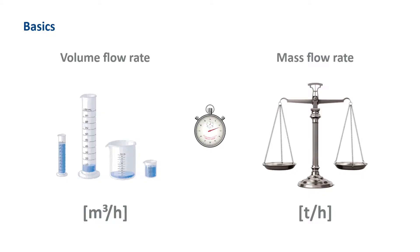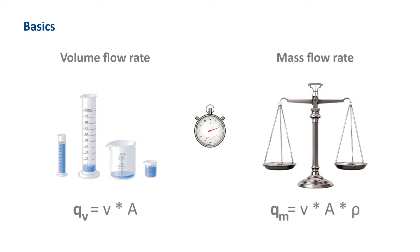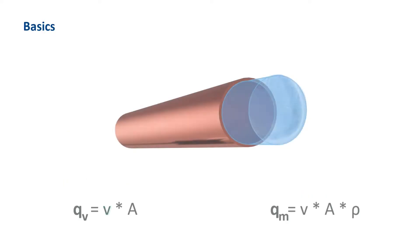All devices available from Jumo are indirect measuring methods. The indirect measuring methods can only record the flow velocity or a resulting substitute variable. The flow rate is ultimately calculated by the device using the pipe cross-section or the k-factor. This is possible because the velocity v is in most cases the only variable in the two formulas, as the pipe cross-section A is constant and in most cases the density of the medium as well.